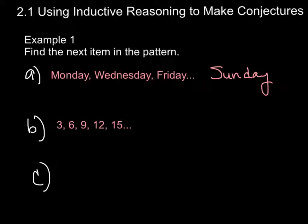Find the next term in this pattern: 3, 6, 9, 12, 15. What's the next number? Hopefully, you figure out it should be 18. How'd you get that? We're talking about multiples of 3. Since we're talking about multiples of 3, the next number would be 18.